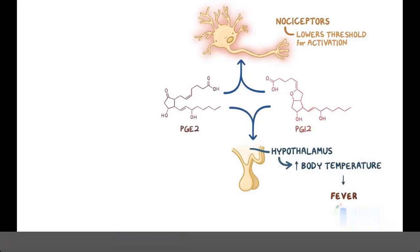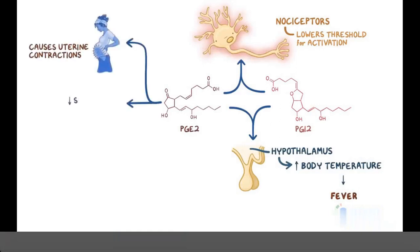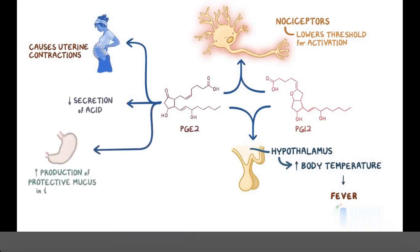Prostaglandin E2 also has other effects, like causing uterine contractions, decreasing the secretion of acid, and increasing the production of protective mucus in the stomach.